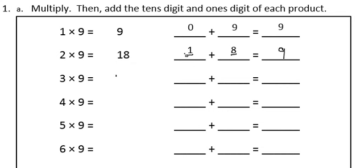3 times 9 is 27. 2 is the tens digit. 7 is the ones digit. 2 plus 7 equals 9.